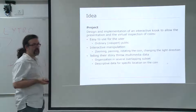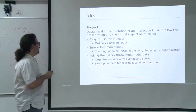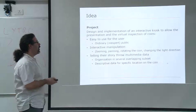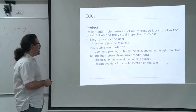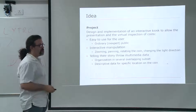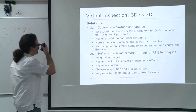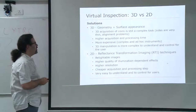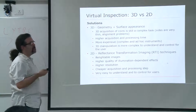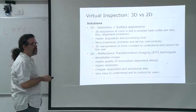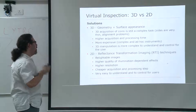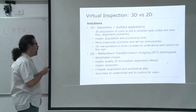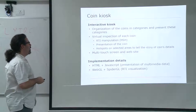Even if some interaction is more difficult because you are working inside a sandbox, web technology is that stable kind of thing. So interactive manipulation — zooming, panning, rotating the coin, changing the light direction — and trying to have hot spots around the coin. We didn't want to do a 3D scan plus surface appearance because, as I said, that especially for coins never works. On the other hand, reflectance transformation imaging is perfect for this.